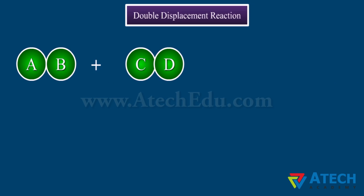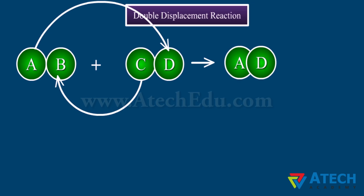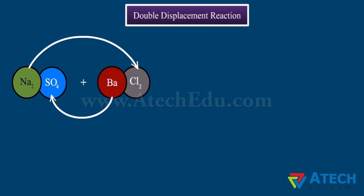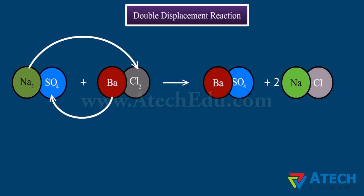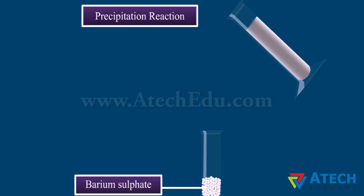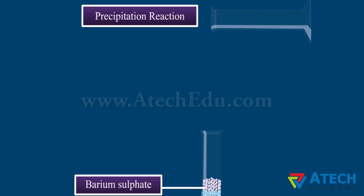A Double Displacement Reaction is a reaction in which ions are exchanged between the reactants. The general form is: AB and CD undergo double displacement to form AD and CB. A classic example is sodium sulfate reacting with barium chloride to form barium sulfate and sodium chloride. Barium sulfate is a white substance insoluble in water, known as a precipitate. Any reaction that produces a precipitate is called a precipitation reaction.